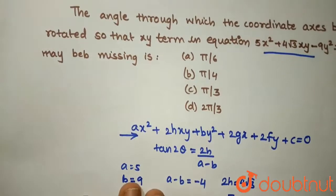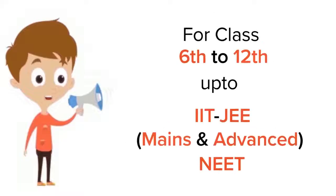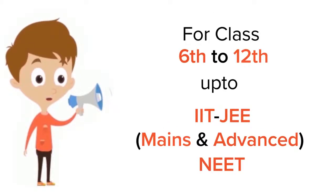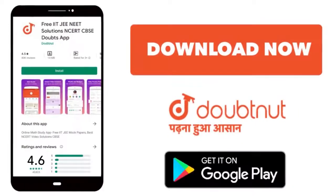So the answer for this question is option C, π by 3. Thank you. For class 6 to 12, IIT-JEE and NEET level, trusted by more than 5 crore students, download Doubtnut today.